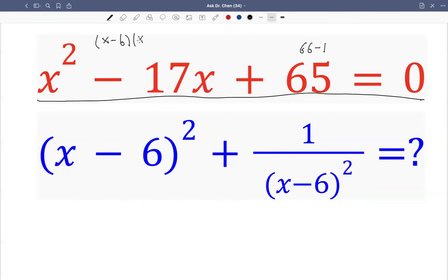So we can do this x minus 6, x minus 11, then minus 1 equals 0, or this equals 1. Right, because this one gives us x squared minus 17x plus 66. So basically we add 1 on both sides.